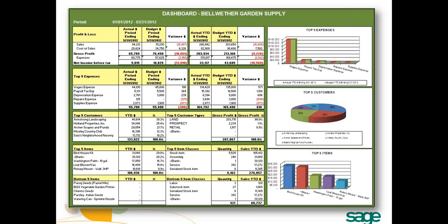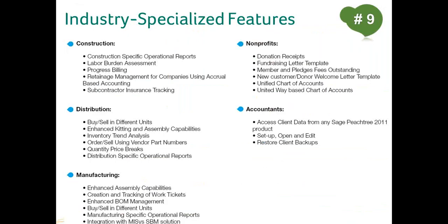Speaking of a range of tools, another great advantage of Sage Peachtree Quantum is number nine, its industry-specialized features. Quantum includes all of the specialized features for several industries, including construction, distribution, manufacturing, non-profits, and accounting. We understand that your business may need the specialized features of more than one of these industries, so we offer them all together. For instance, a local Habitat for Humanity chapter is both a non-profit and in the construction business. With Quantum, they can create construction-specific reports as well as track donation receipts, among other things. Another example is a manufacturer that does its own distribution to dealers or retailers.